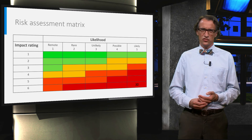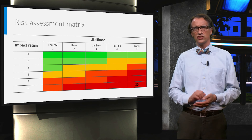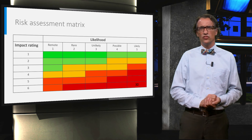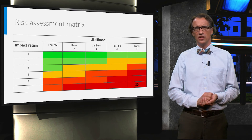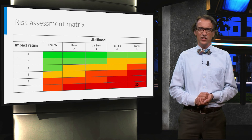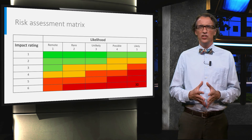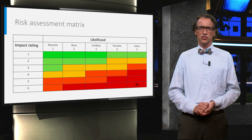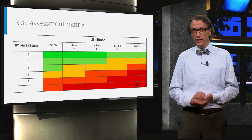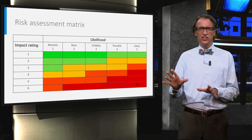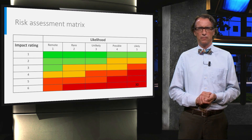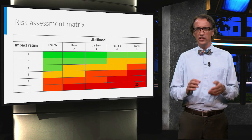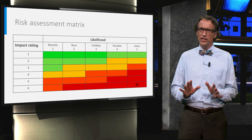To prioritize risks, a so-called risk assessment matrix can be used. In a qualitative way, on the vertical axis the impact of the risks is determined, and on the horizontal axis you see the likelihood of the risk. Here we use a six-point scale for impact and a five-point scale for likelihood. If the impact is high and the likelihood is high, this results in a maximum score of 30. As an organization you need to think about what risks you are willing to take — this will probably be the greener areas.